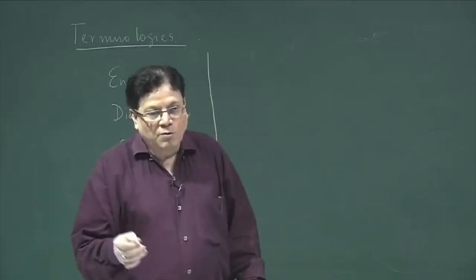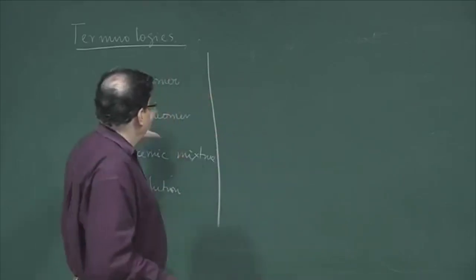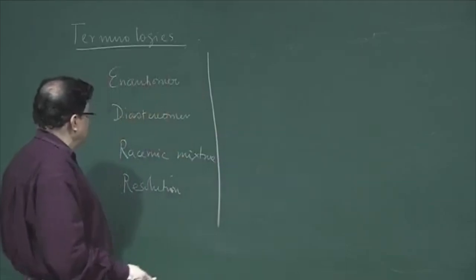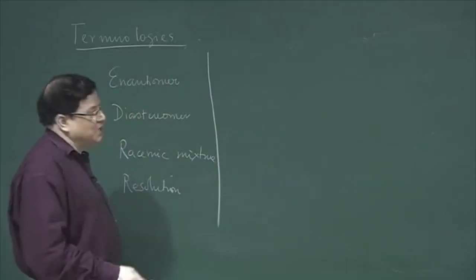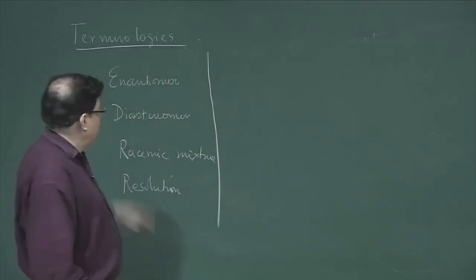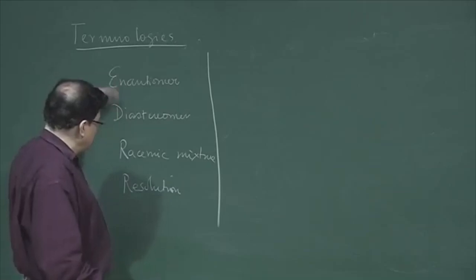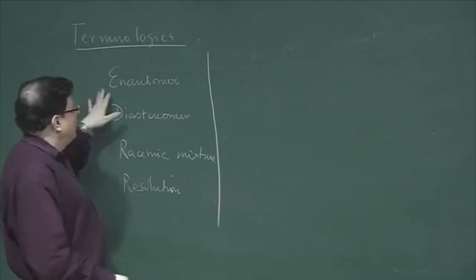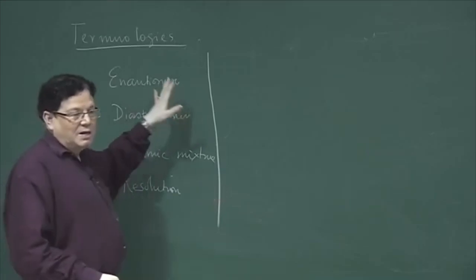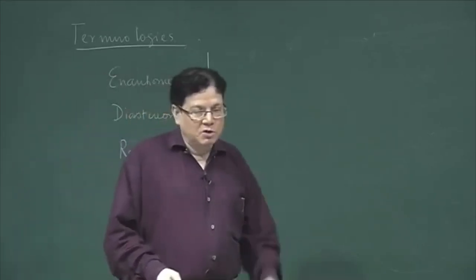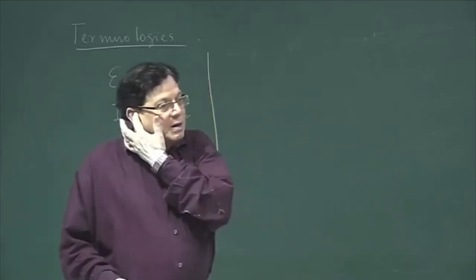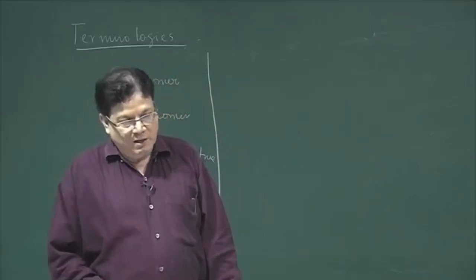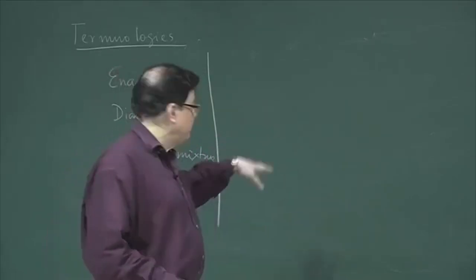Before going further, let me clarify some of the terminologies used in stereochemistry. We have been exposed to at least two or three of these, but let me repeat. Enantiomers: they are non-superimposable stereoisomers which are non-superimposable mirror images of each other. They are chiral in nature.